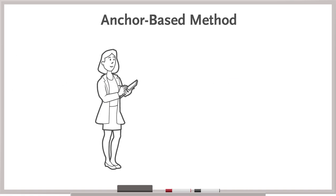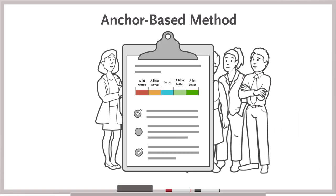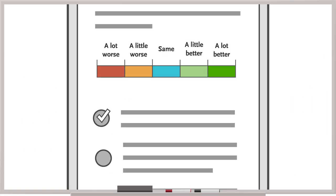First, the anchor-based method. This involves directly asking patients or caregivers about their perceptions to allow investigators to see what magnitude of change correlates with a patient being, say, a little worse or a lot worse.